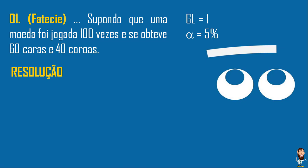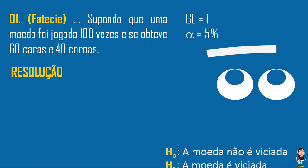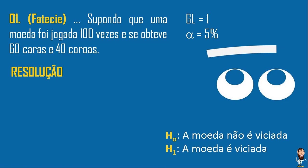Será que essa moeda é viciada ou não é viciada? Na resolução, a gente tem que criar as hipóteses. O H0 é a hipótese de que a moeda não é viciada, e a hipótese H1 é que a moeda sim, ela é viciada. Vamos ver se ela não é viciada — hipótese H0 — ou se ela é viciada — H1.